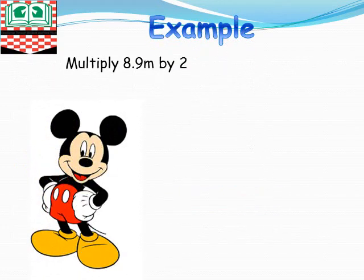Now, let's do the last example. Let's multiply 8.9 meters by 2. Don't forget to write your units. Then, 8.9 times 2.